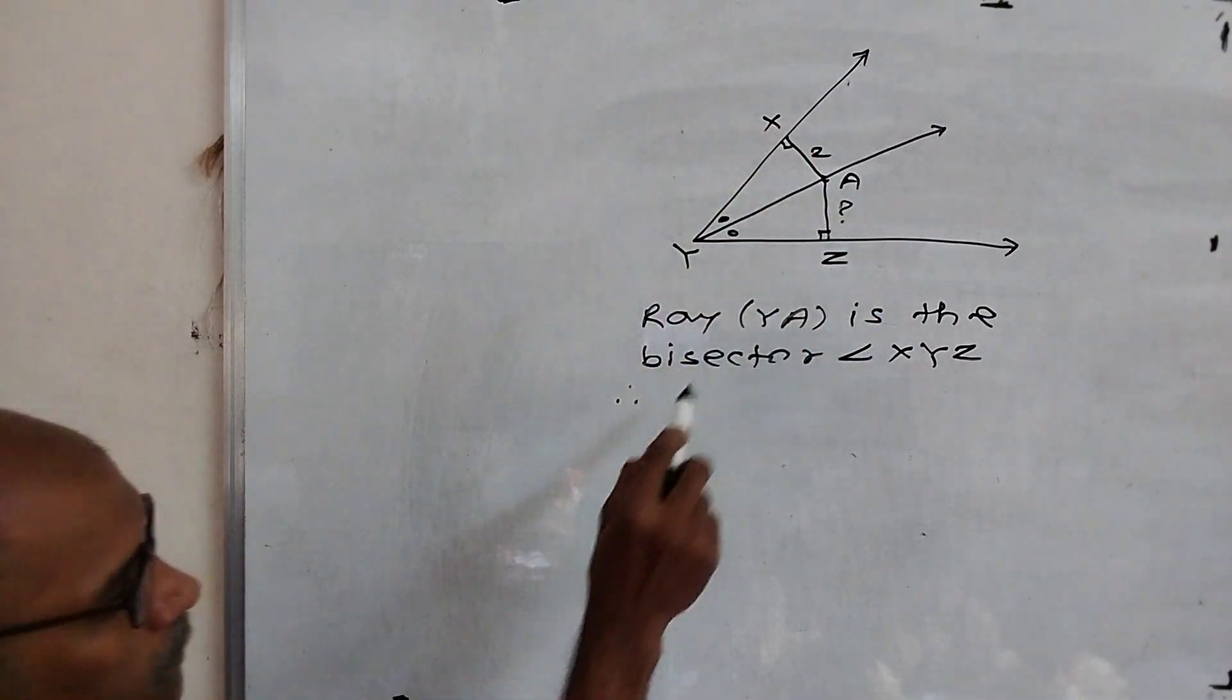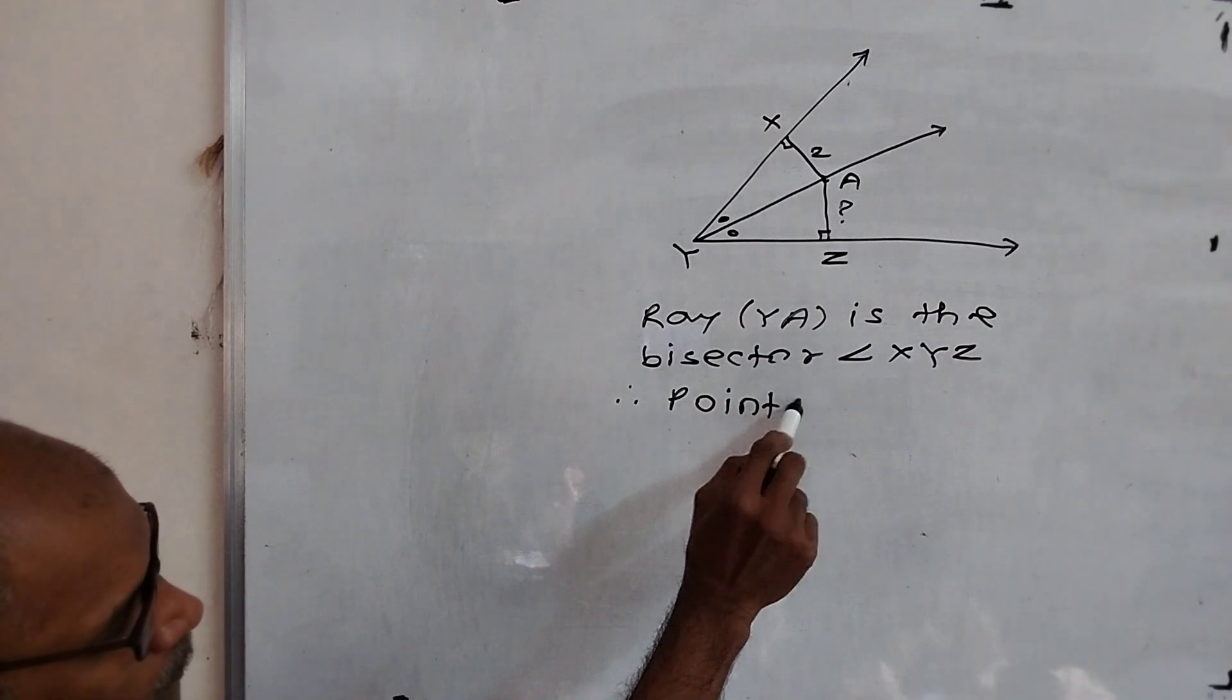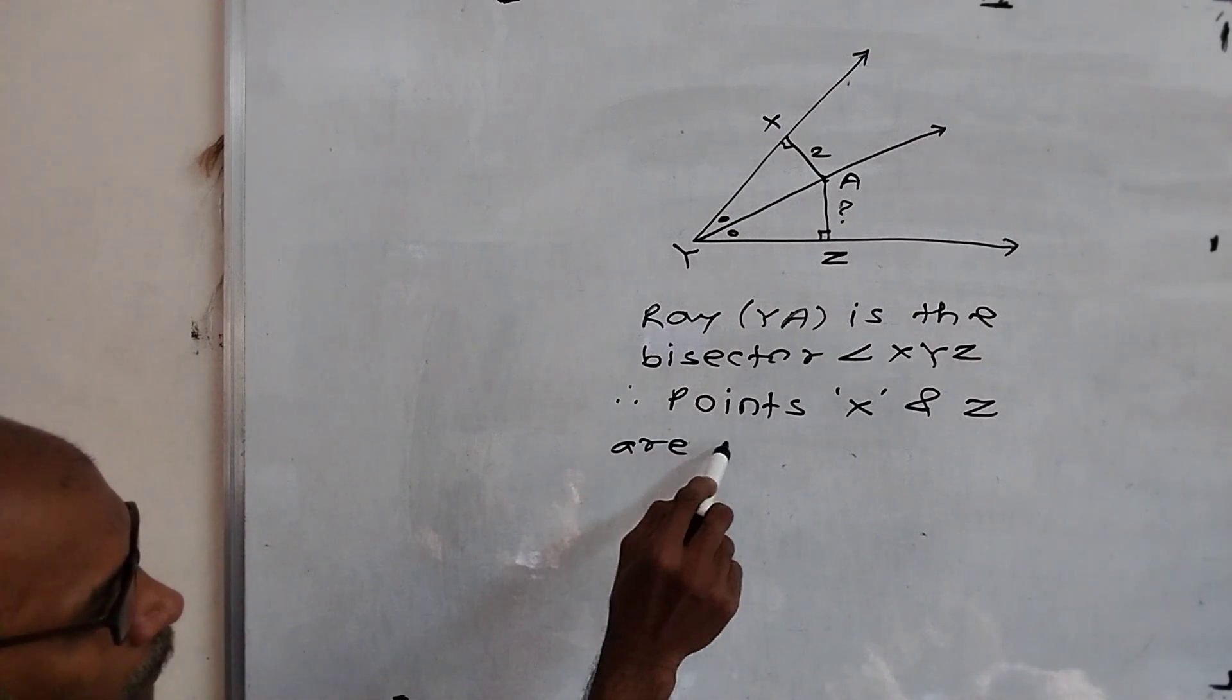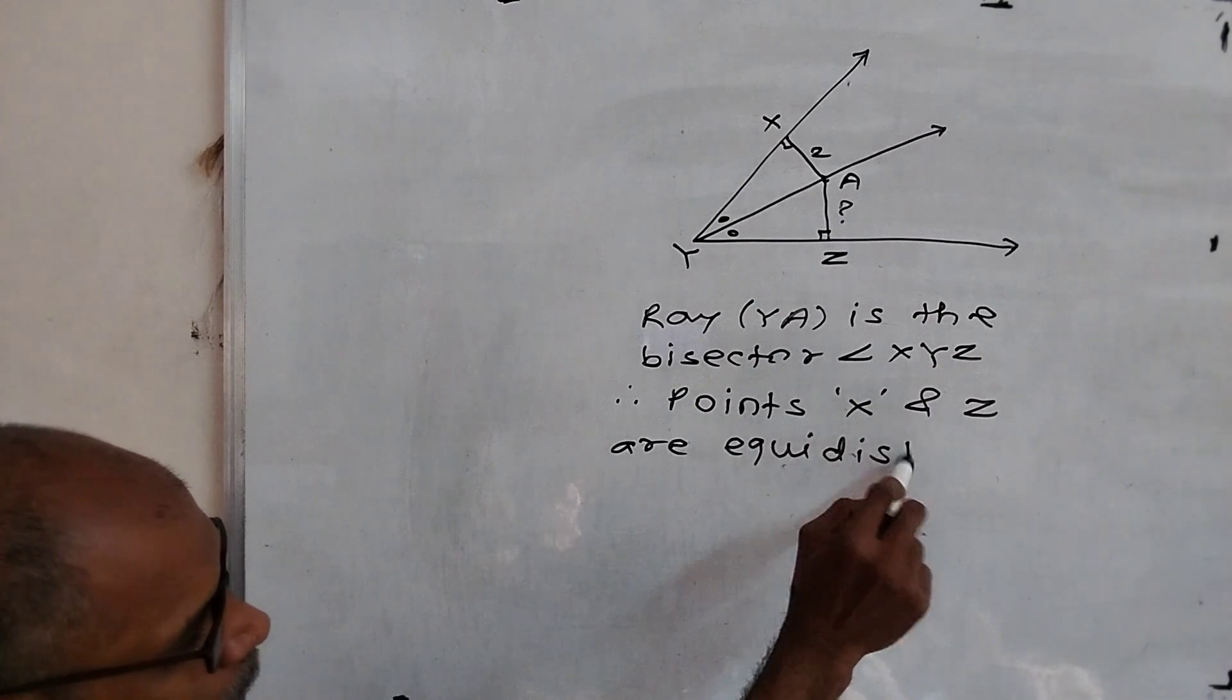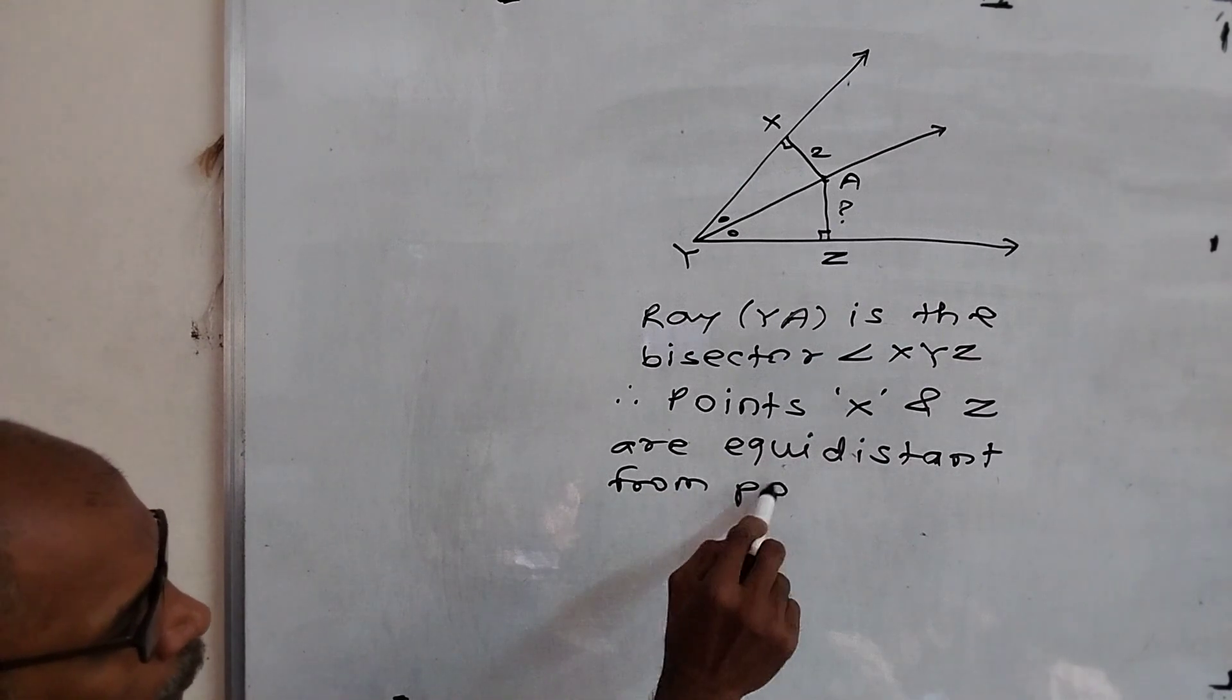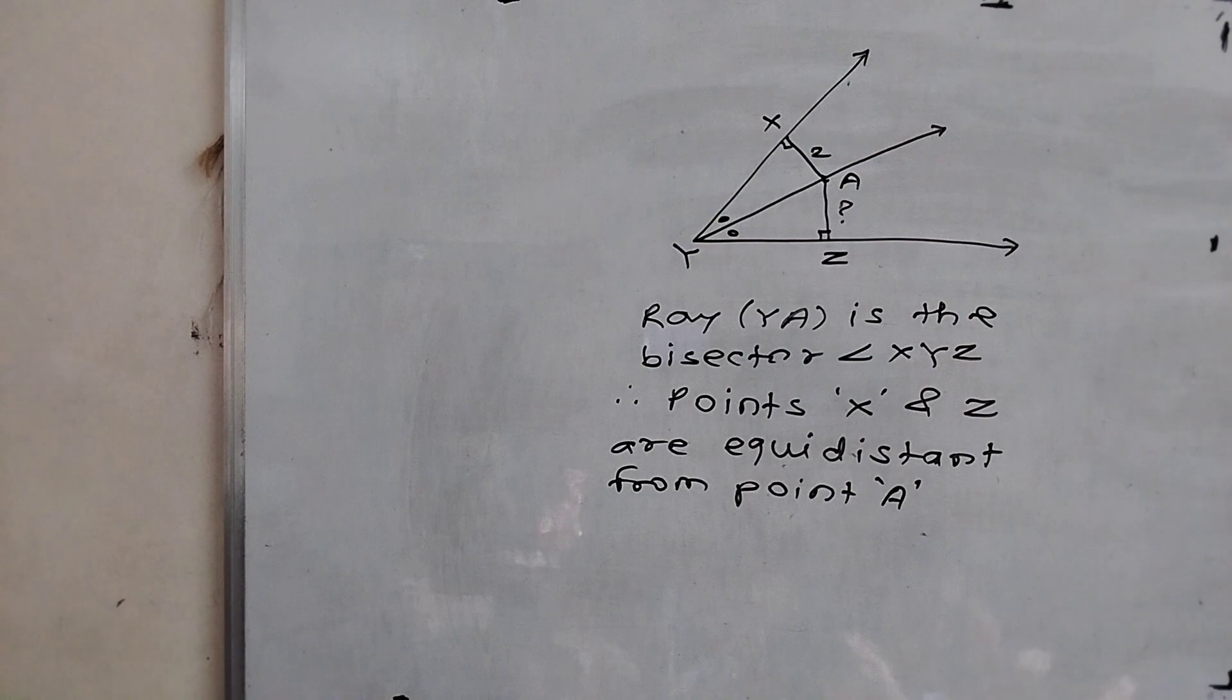Points X and Z are equidistant from point A. Did you understand?